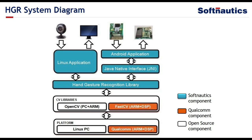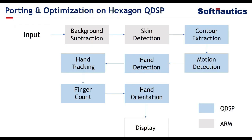The gesture recognition library can work on PC as well as on the Qualcomm Snapdragon platform having ARM plus Hexagon DSP core. Our library uses the open-source OpenCV library on the PC side, and an OpenCV and FastCV combination library on the Snapdragon platform for intermediate image processing.